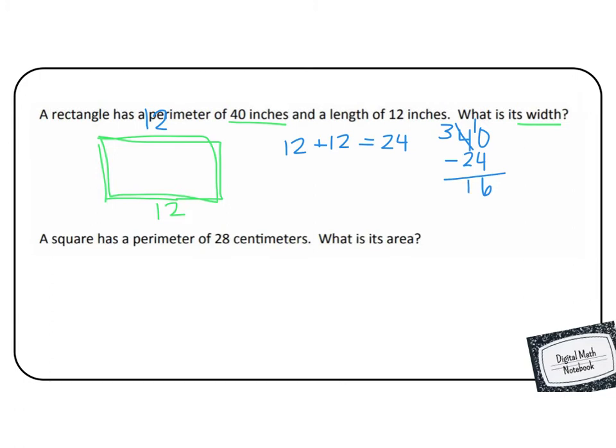So that means when I put both sides together, I get 16. But I need to divide that by 2 because it's two sides. And 16 divided by 2 is 8, so that must mean that the width is 8. Great job. Let's try another one.